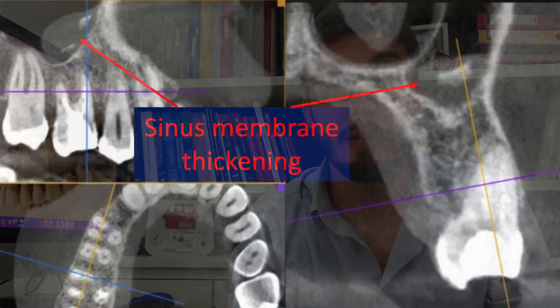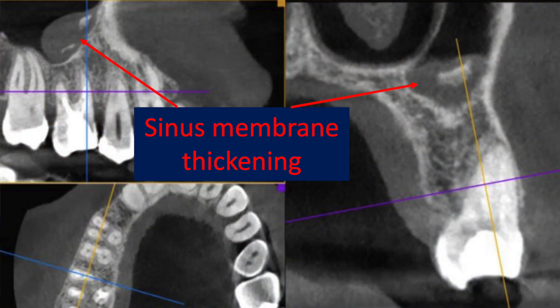Similarly, sinus membrane thickening usually indicates inflammation of the sinus. We need to pay attention to this, as the inflammation can be caused by a periapical lesion or a periapical alteration of one of the roots in proximity with the sinus.